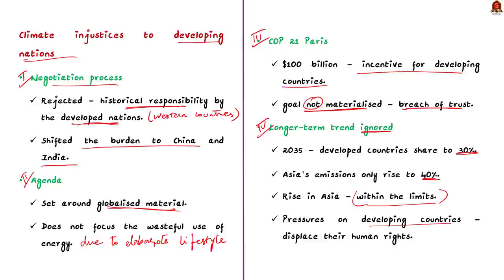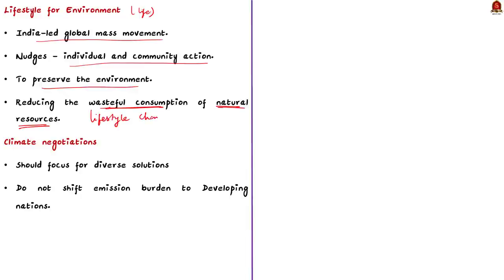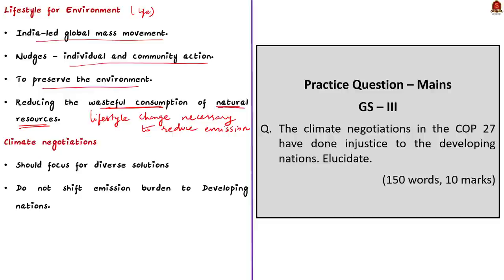The author advocates for climate justice keeping in mind the aspirations of developing countries. Finally, the author appreciated India's initiative of LiFE, or Lifestyle for Environment. LiFE is an India-led global mass movement that nudges individual and community action to preserve the environment. This initiative will help in reducing wasteful consumption of natural resources. To conclude, climate negotiations should focus on diverse solutions rather than shifting the emission burden towards developing nations.